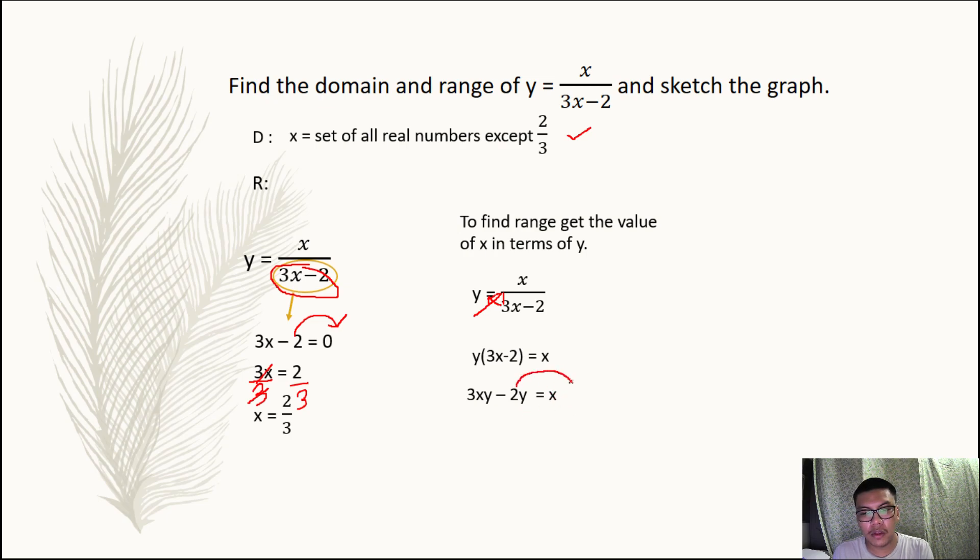Now we're going to solve for x, so to solve it, move the negative 2y to the right and the x to the left. So we obtain 3xy minus x is equal to 2y.